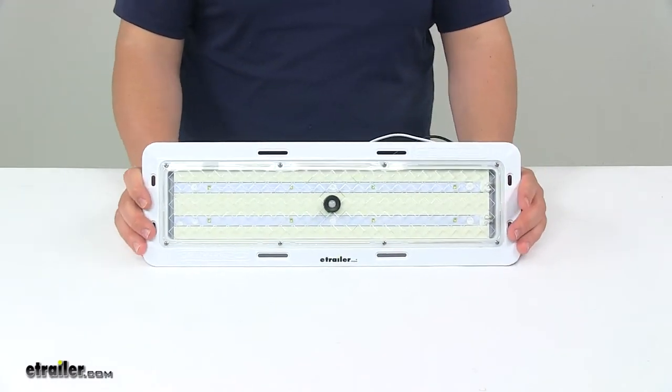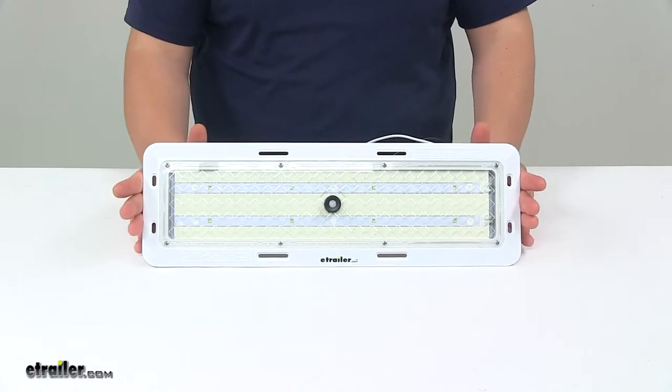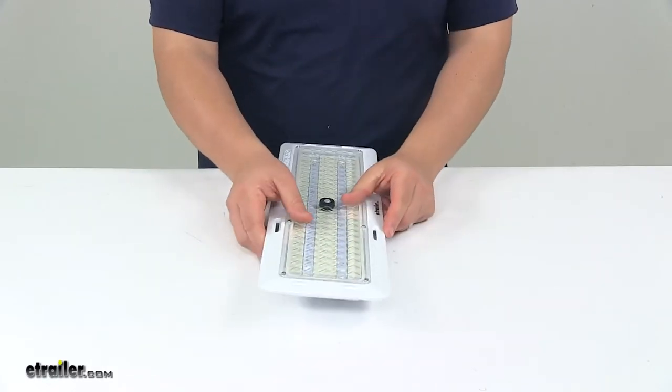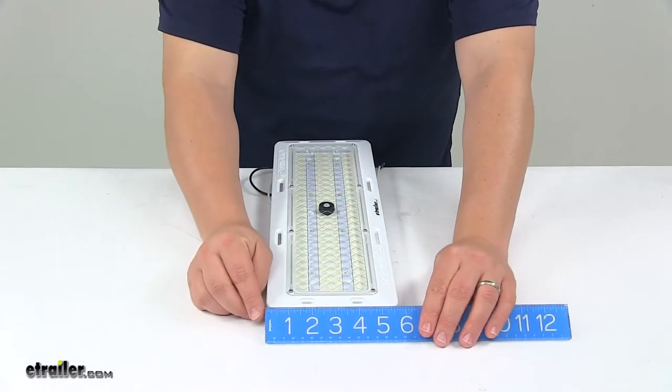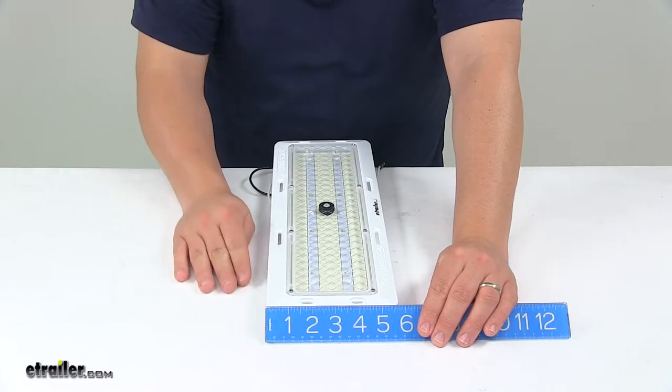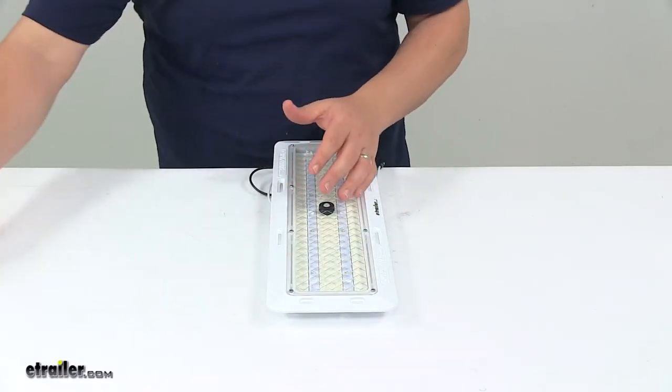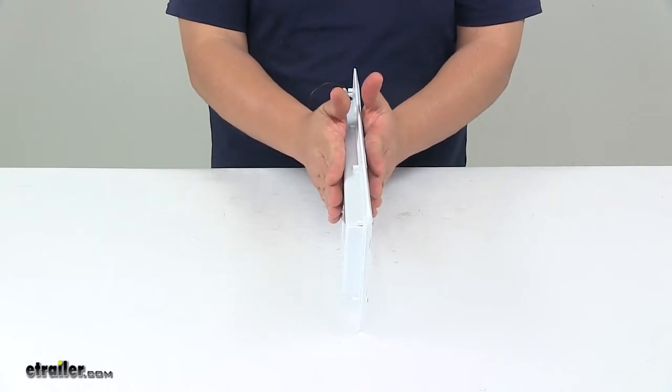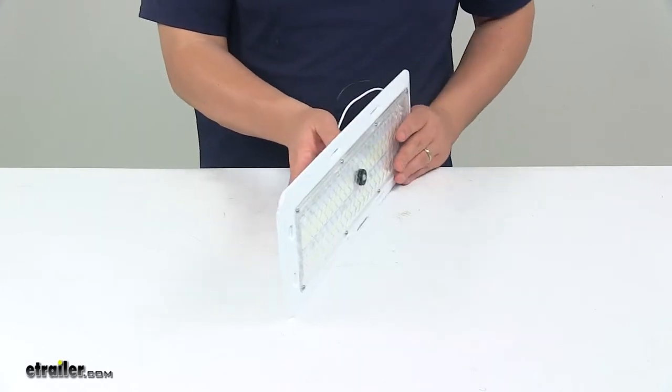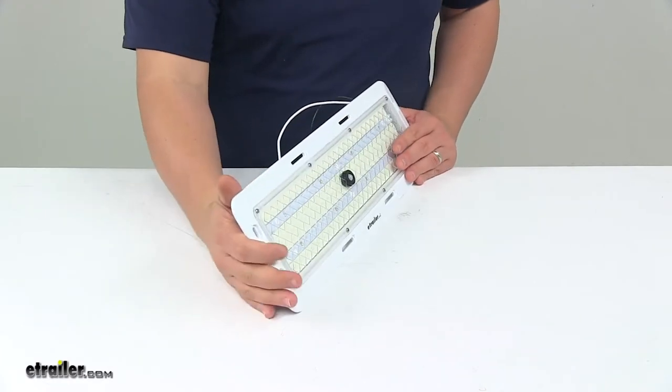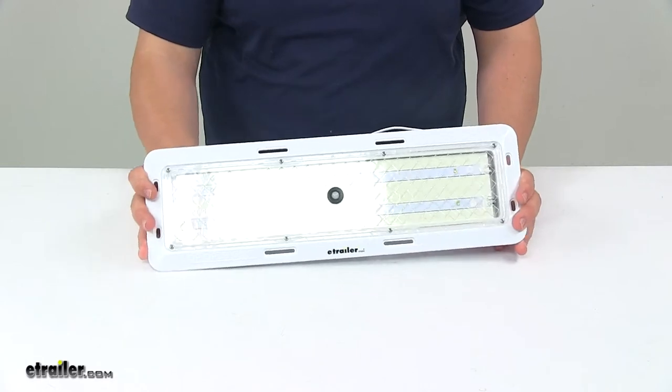Now when it comes to the overall dimensions, I took a measurement from edge to edge. Got a measurement of 18 and one-quarter inches long, side to side. We're looking at about five and three-quarter inches wide. And the overall thickness, or the overall depth, from very front to very back, is one and one-eighth inch thick. From the installation surface to the front of the unit is only about three-eighths of an inch thick. So it's a nice low-profile design once installed.